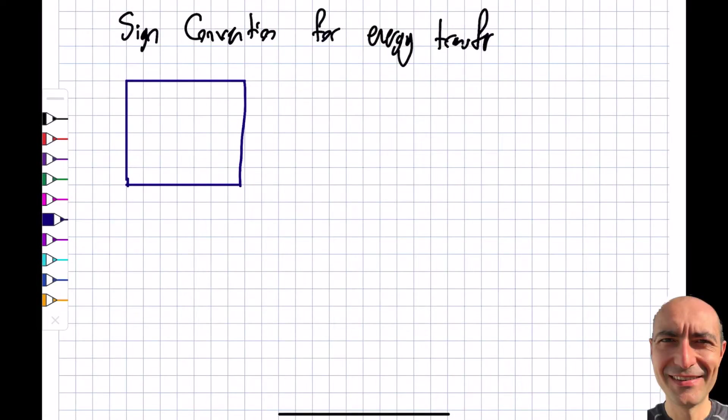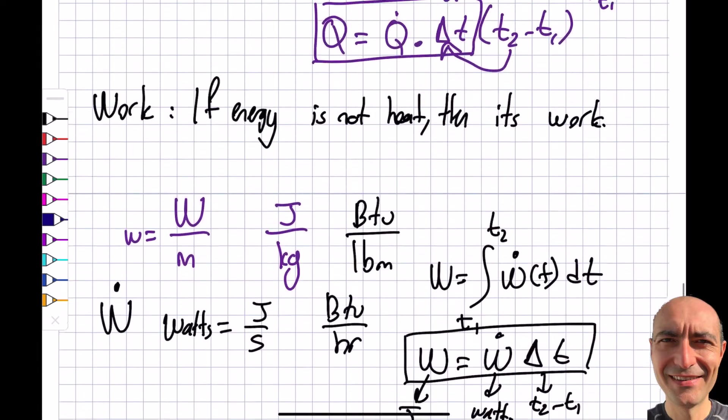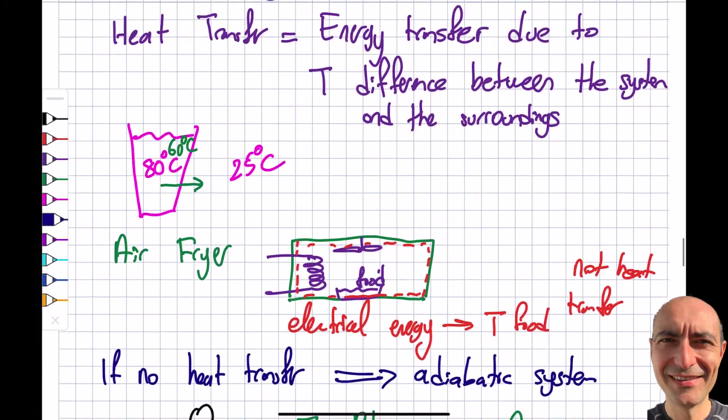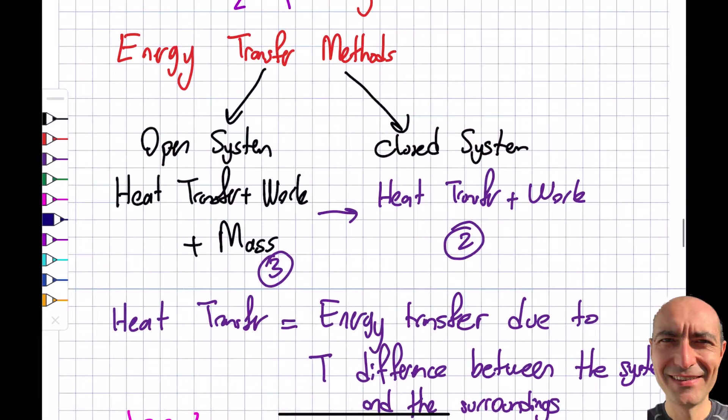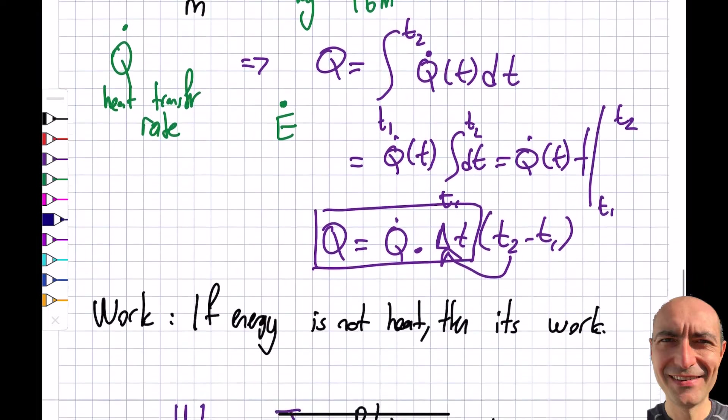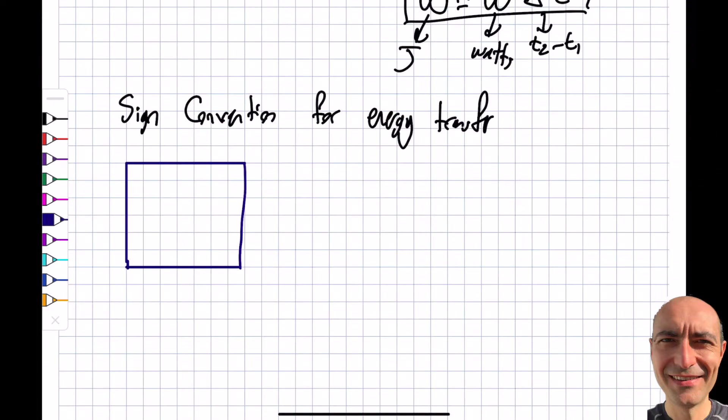Let's talk about the sign convention for energy transfer. For a closed system, there are two ways to do it: heat transfer and work. I want you to be careful because there is a loophole that I would like you to be aware of.